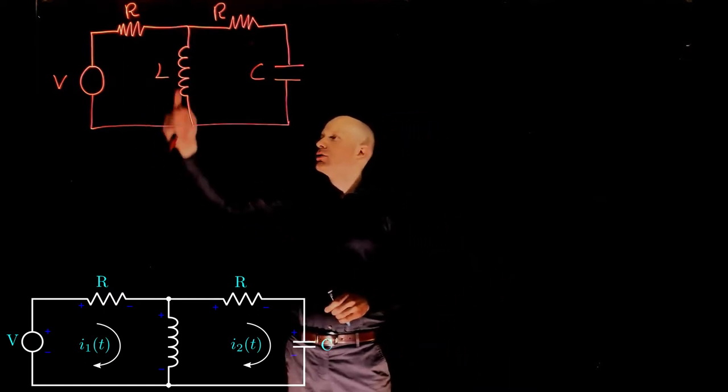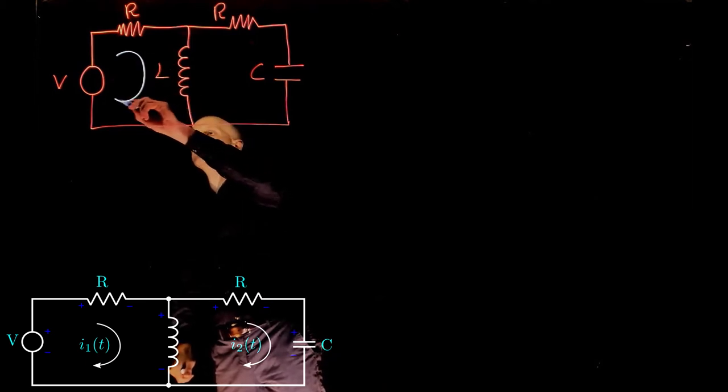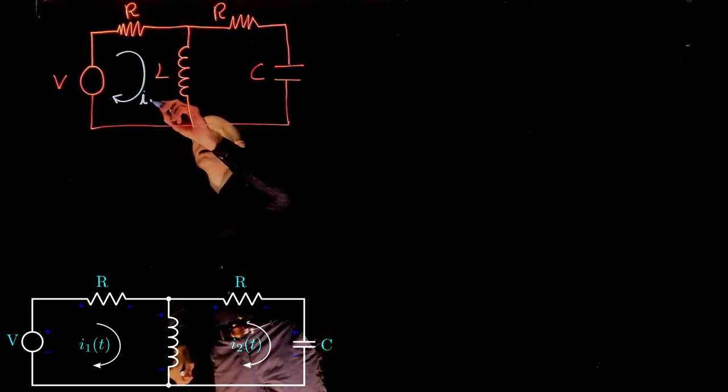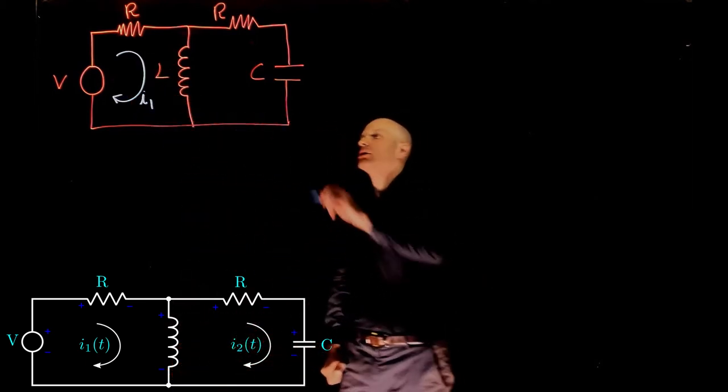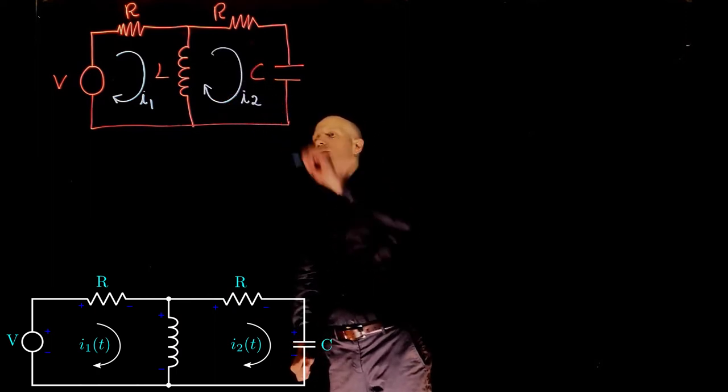Let's start with this loop here. We can say that in this loop there is a current I1, and in the second loop we have a current I2.